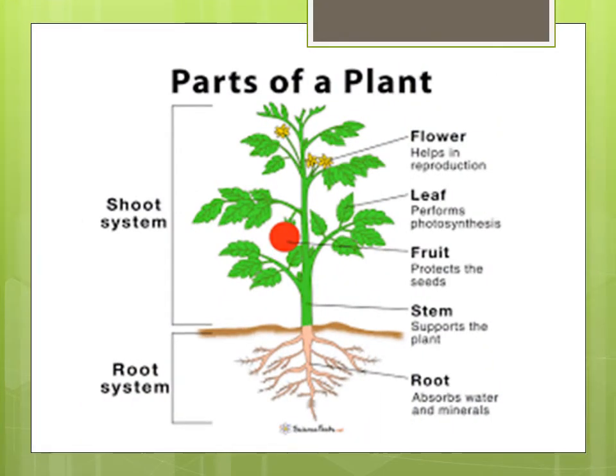As we have already learnt, the plant is divided into two parts: the shoot and the root. The different parts of the plants are leaves, fruits, flowers, stem, and the roots. Every part has a different function which helps in the growth of the plant.